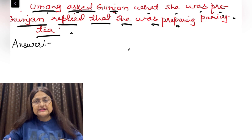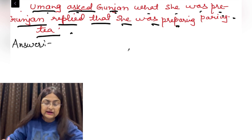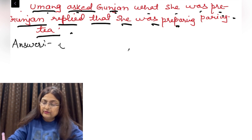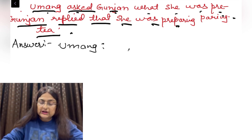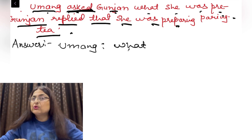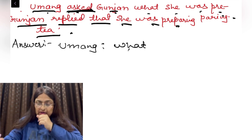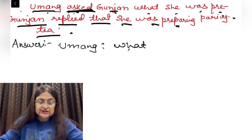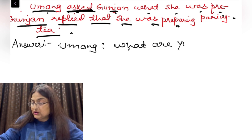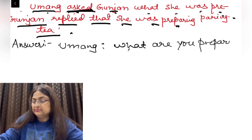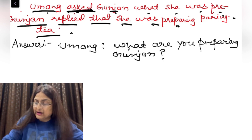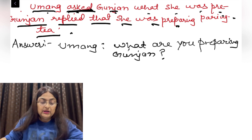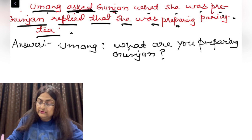Now you have to give the reply in dialogue pattern, just like the first example. Write it in dialogue pattern: Anum — 'What are you preparing, Gunjan?' — because this is a question, the word 'ask' was used. So use a question mark, because this is a question asked by Anum. Now the reply has been given by Gunjan.